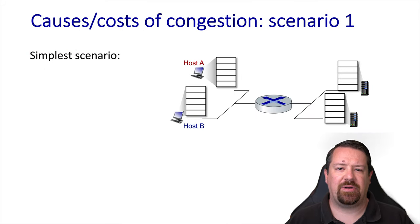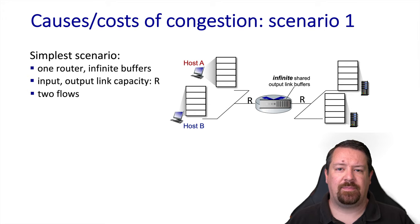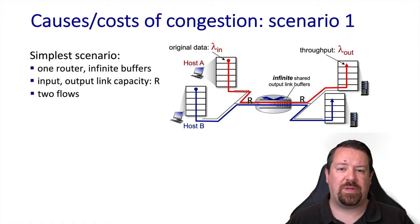Now we'll look at some scenarios. It's typical for there to be a bottleneck link somewhere along the path between a source and a destination. In this scenario there's a router feeding that link with a shared output buffer. The input and output link capacity in this case are both R. We'll have two flows passing through these links, so host A is sending at lambda in, and the throughput making it through to the receiver is lambda out.